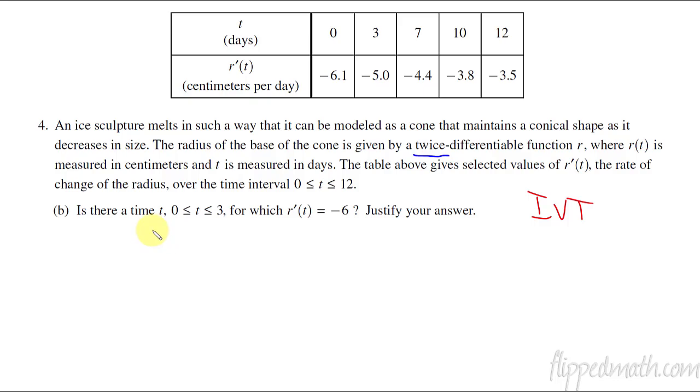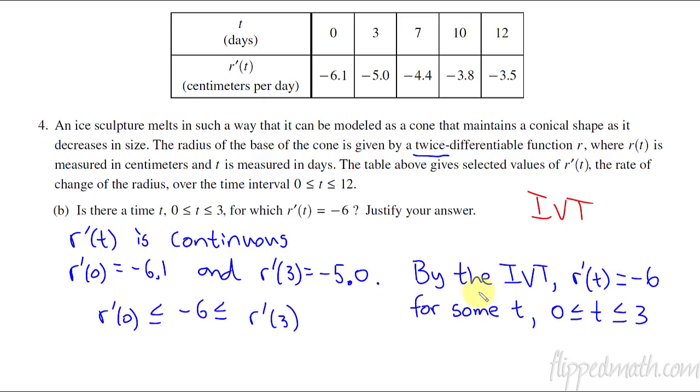That twice differentiable stuff tells us that we know r prime is continuous. It's differentiable therefore it's also continuous. So we're allowed to use the intermediate value theorem. r'(0) equals negative 6.1 and r'(3) equals negative 5. If we're at negative 6.1 and we go up to negative 5, at some point in there we must be equaling negative 6. So by the intermediate value theorem, r'(t) has to equal negative 6 for some t on the interval 0 to 3.